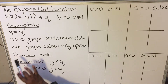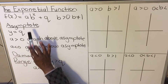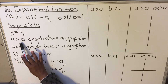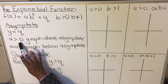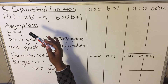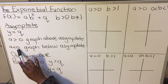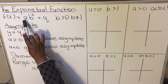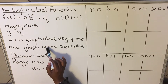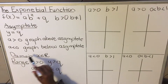Another important thing in this graph: when your a is greater than zero, meaning a is positive, the graph will be above the asymptote. And when your a is less than zero, meaning your a is negative — that number there is negative — your graph will be below the asymptote.